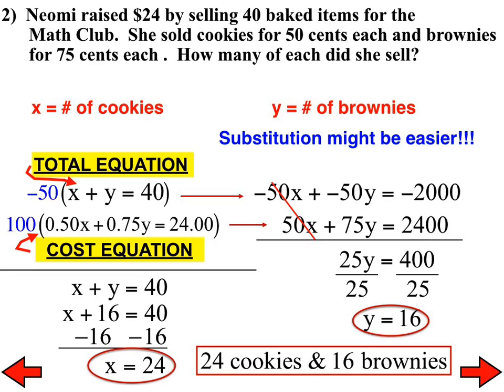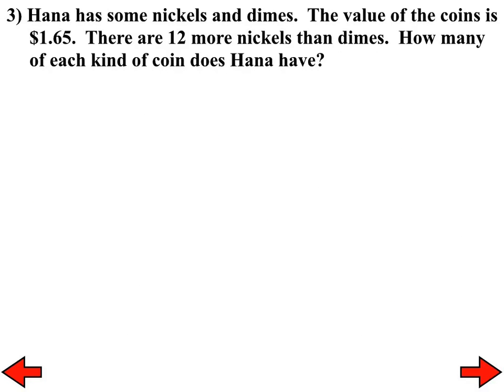Let's go to number three. Number three is slightly different in some respect. Hannah has some nickels and dimes. The value of the coins is $1.65. There are 12 more nickels than dimes. I think there might be a typo in the notes. It's supposed to say 12 more nickels than dimes. I remember the teacher who does the notes let me know that there was a typo there. Make sure you fix your notes to represent or look like this problem right here. There are 12 more nickels than dimes.